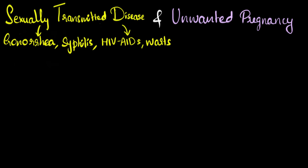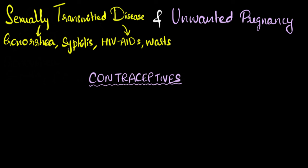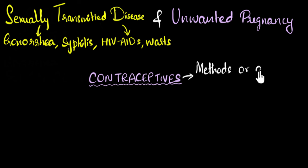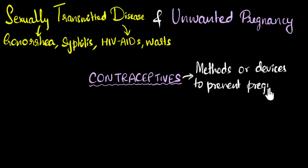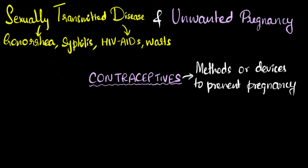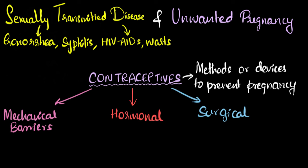So now let's talk about how we prevent them. We can prevent them by using what we call contraceptives. So what exactly are contraceptives? Contraceptives can be thought of as methods or devices to prevent pregnancy. So contraceptives are mostly thought of in terms of unwanted pregnancy — these are the things that we do to prevent pregnancy. Broadly, we can classify contraceptives into three kinds.